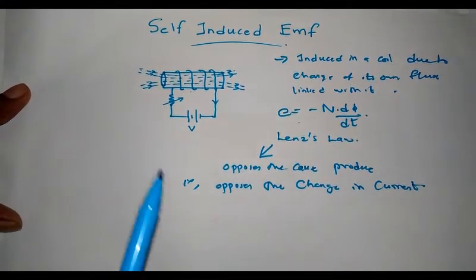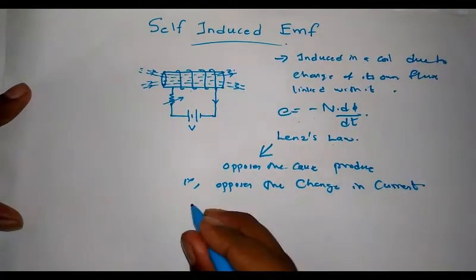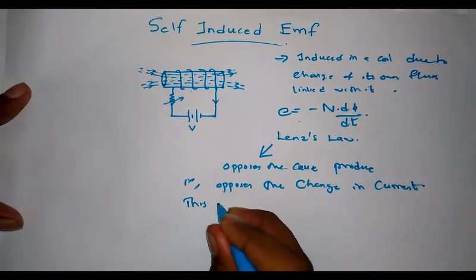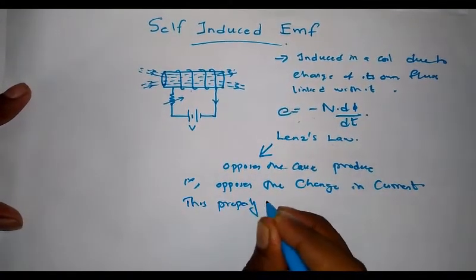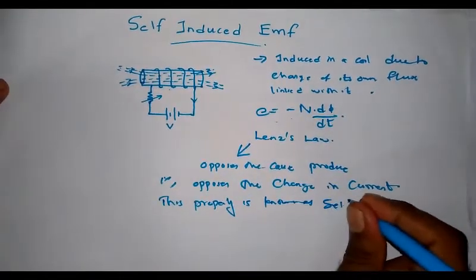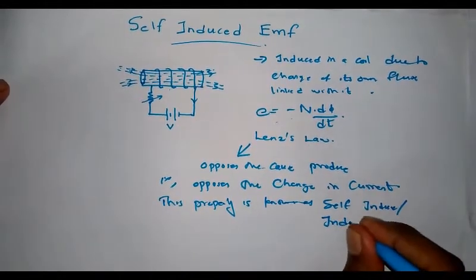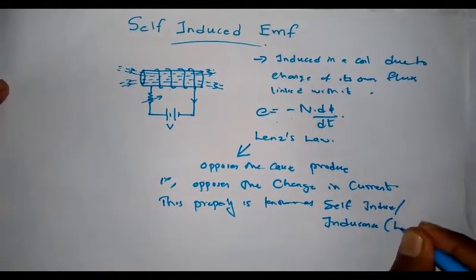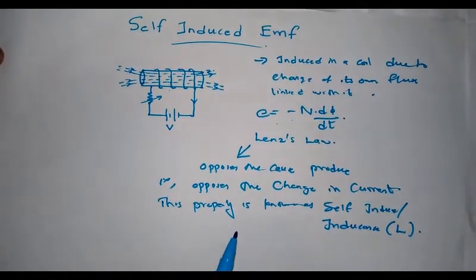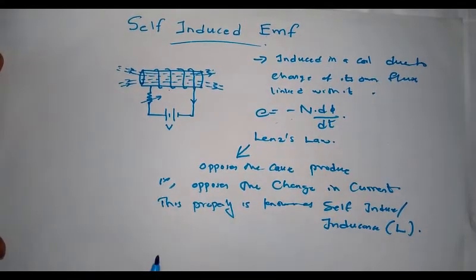This property of the coil to oppose the change in current is known as self-inductance, or simply inductance L. Therefore, inductance is the property of a coil to oppose the change in current flowing through it, as a result of Lenz's law.